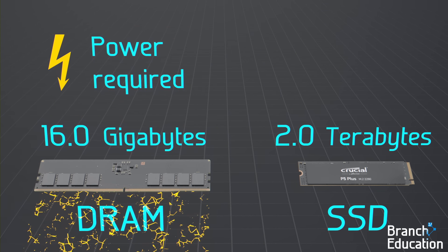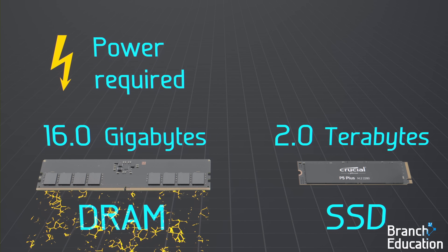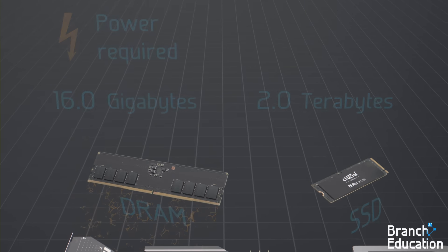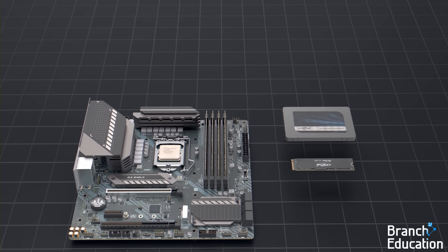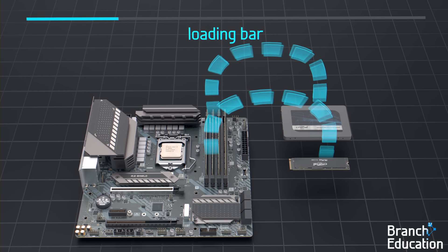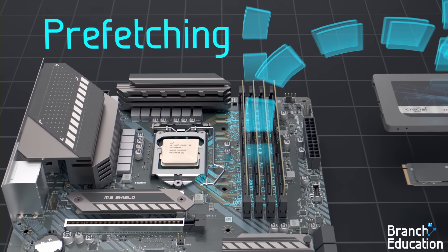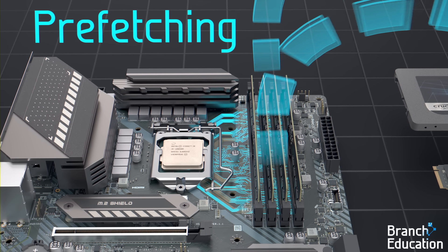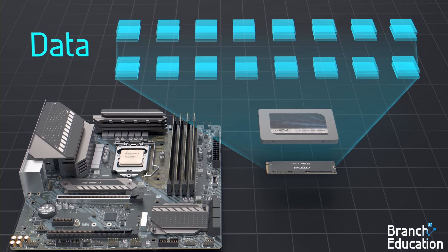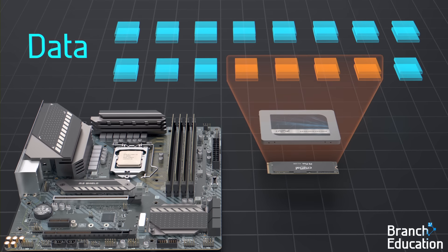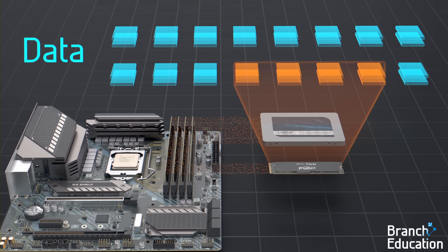Additionally, DRAM requires power to continuously store and refresh the data held in its capacitors. Therefore, computers use both SSDs and DRAM, and by spending a few seconds of loading time to copy data from the SSD to the DRAM, and then pre-fetching — which is the process of moving data before it's needed — your computer can store terabytes of data on the SSD and then access the data from programs that were preemptively copied into the DRAM in a few nanoseconds.